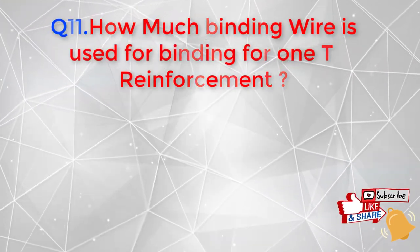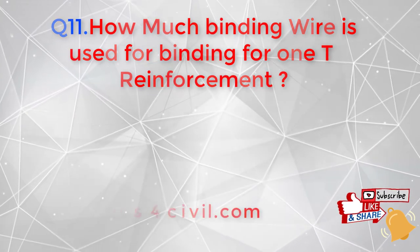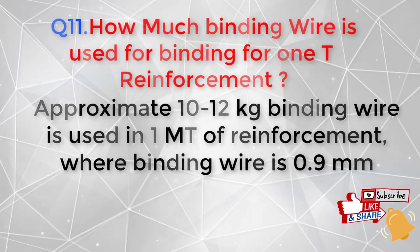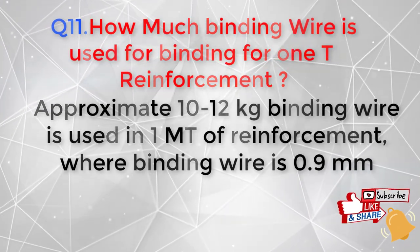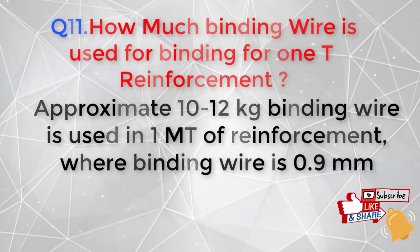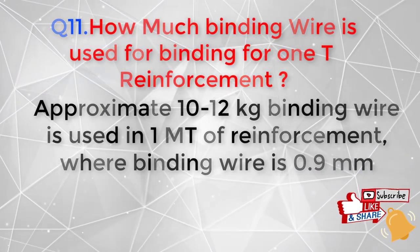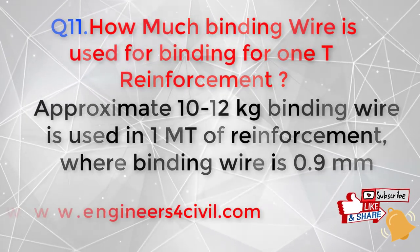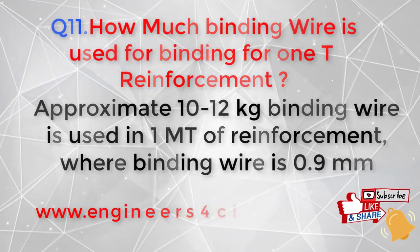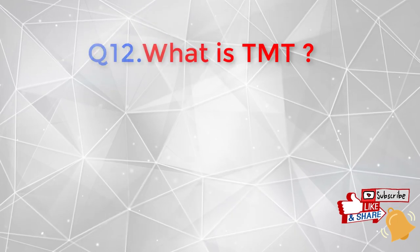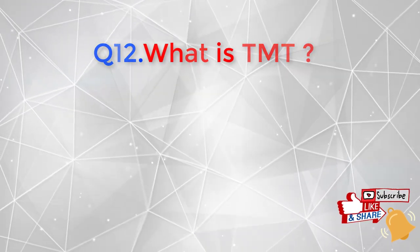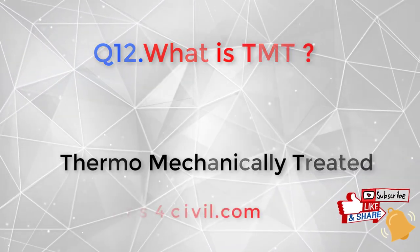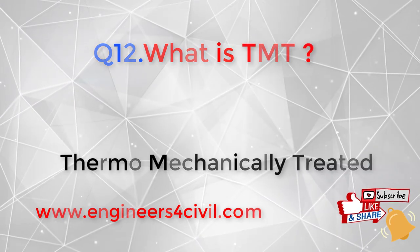The eleventh question is: how much binding wire is used for binding reinforcement? Approximately 10 to 12 kg of binding wire is used per one metric ton of reinforcement. The binding wire is approximately 0.9 mm in diameter.